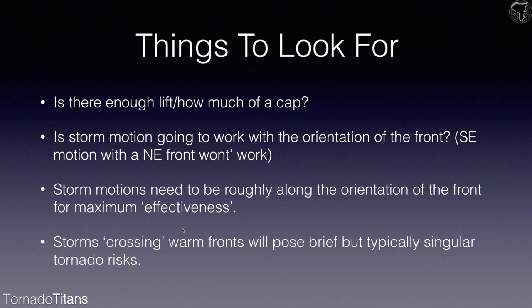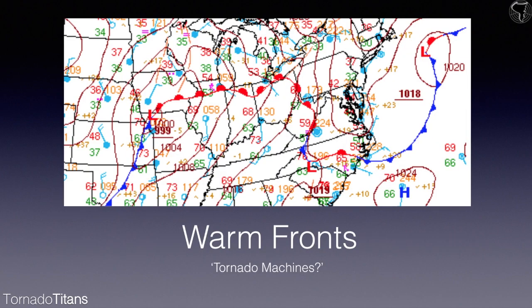Storms crossing warm fronts pose a brief but usually singular tornado risk. If you have a southeast-oriented front and a storm moving toward it, as it interacts with the front it'll probably ramp up and possibly produce a tornado — but once it crosses over, it's done. It's a singular event. From a storm-chasing standpoint, on many marginal days this kind of scenario can be a big 'get,' so it's important to recognize.